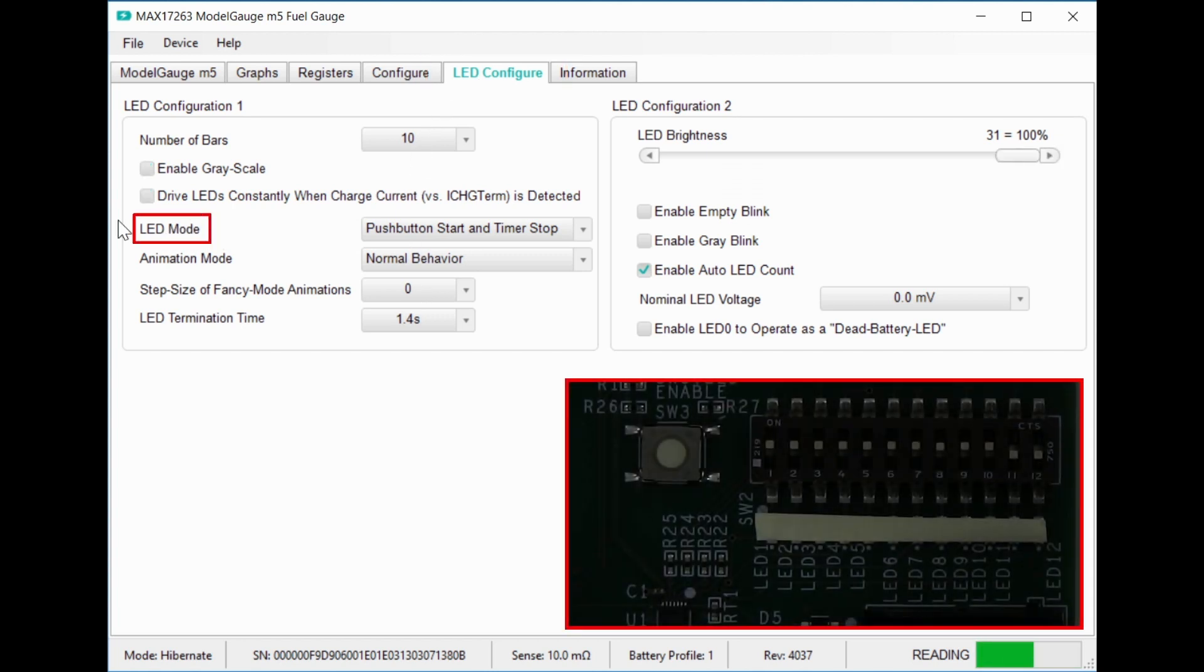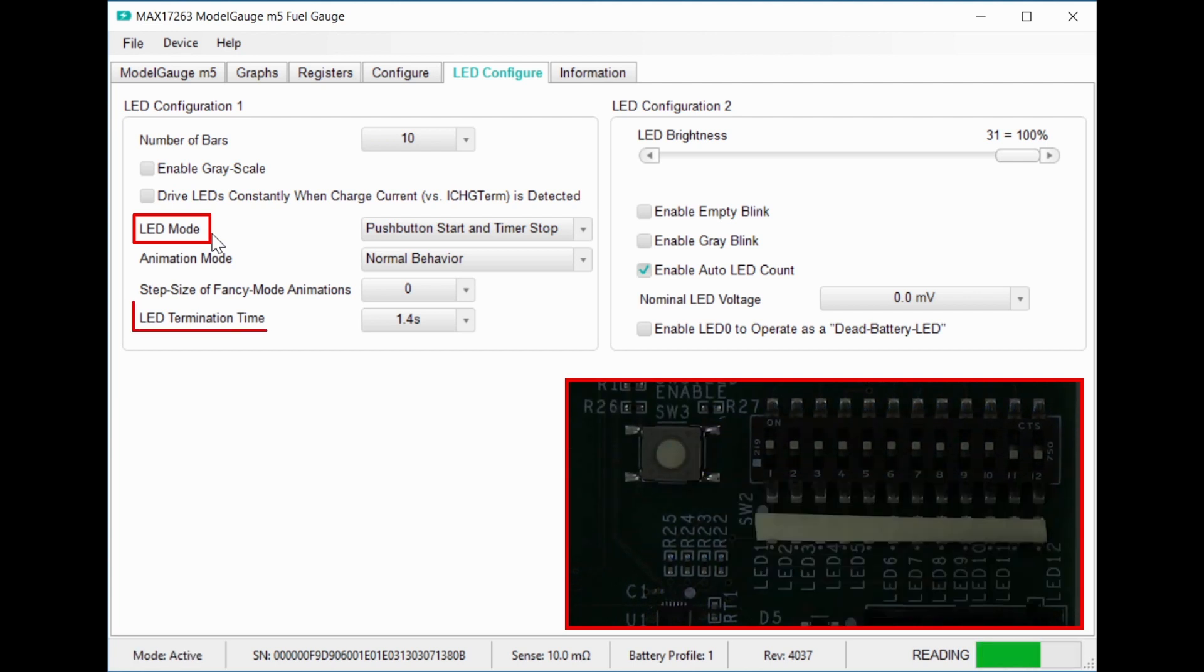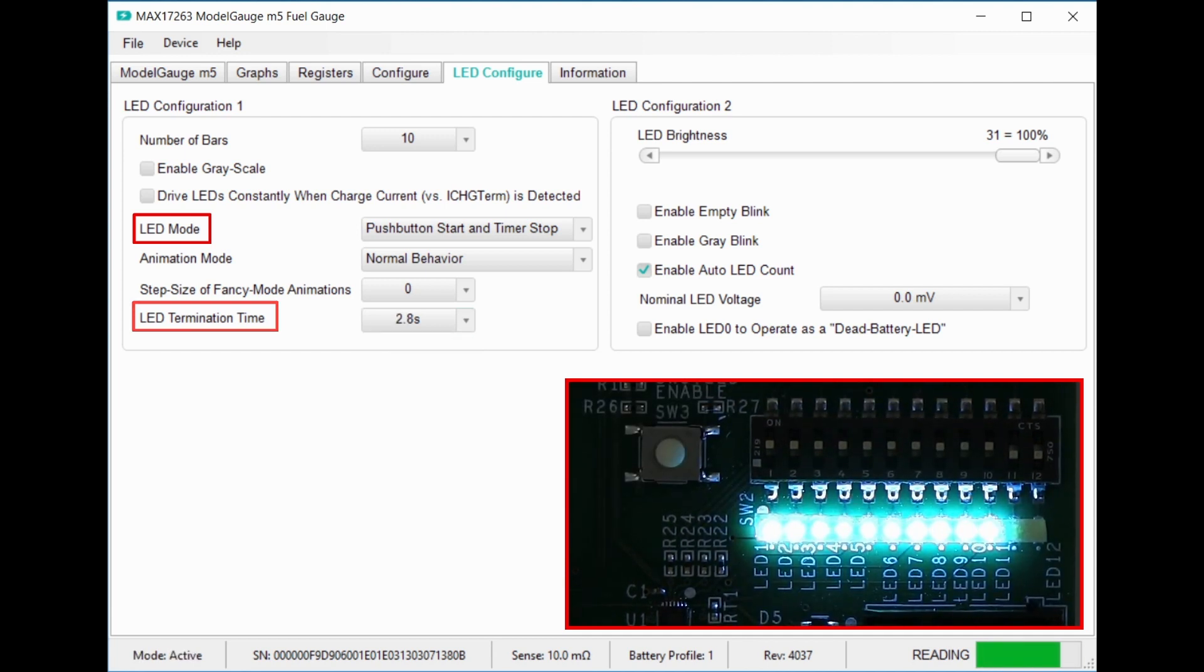The first thing I want to talk about is LED mode. By default, a button press turns on the LEDs for the LED termination time set down here. So if I change this to 2.8 seconds, that's how long they'll stay on when I push the button.